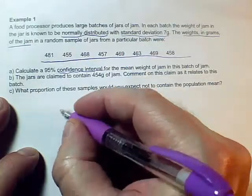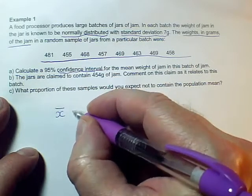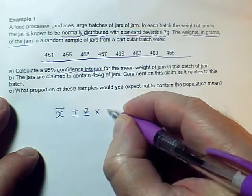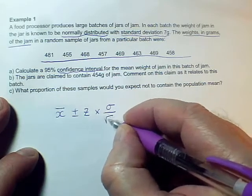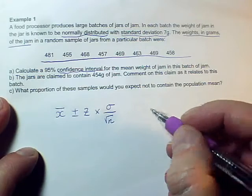So the recipe for confidence interval is the mean of the sample x̄ plus or minus a z-value times the standard error, where the standard error is σ over root n. So I need to know an x̄, a z, a σ, and a root n, and an n.